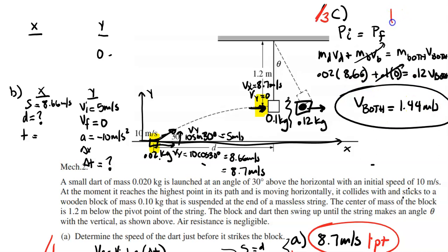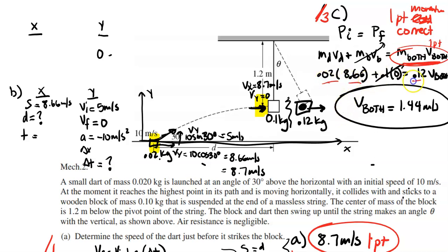For the rubric on part C — worth three points: one point for identifying conservation of momentum, one point for recognizing it's a completely inelastic collision (both stick together, one term on the right side), and one point for plugging in correct masses and velocities to get V_both = 1.44 m/s. If you made an earlier error but stayed consistent, you still get that last point.